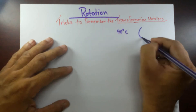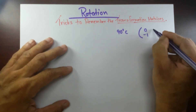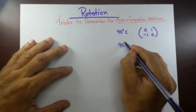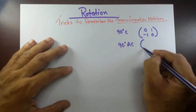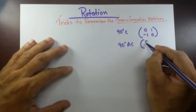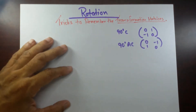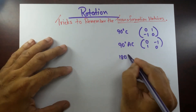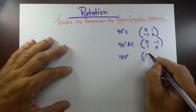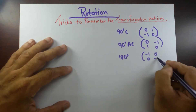The transformation matrix for 90 degree clockwise would be: 0, minus 1, 1, 0. And 90 degree anti-clockwise would be: 0, 1, minus 1, 0. And 180 degree rotation is: minus 1, 0, 0, minus 1.